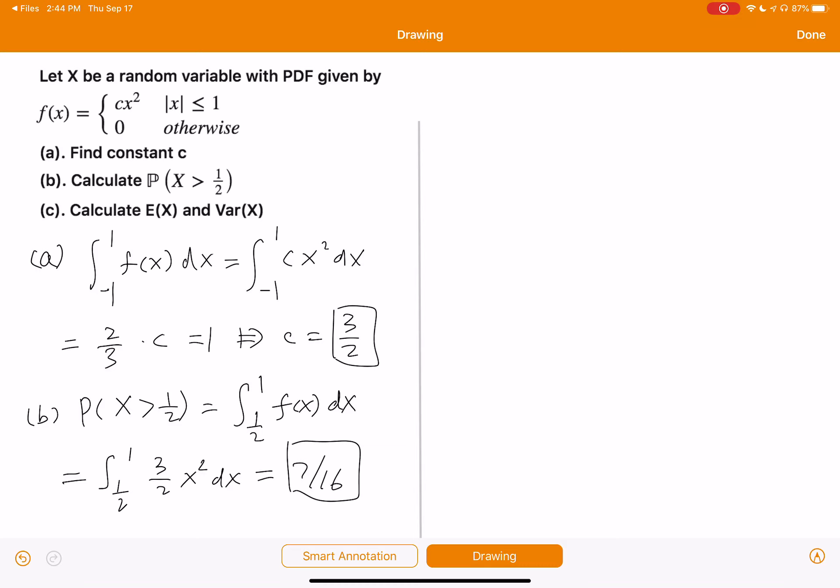Now let's look at c, the expected value of X. This is equal to from negative one to positive one, x dx. This is equal to x times cx squared, which is 3 over 2 x squared dx. And this is equal to 0.